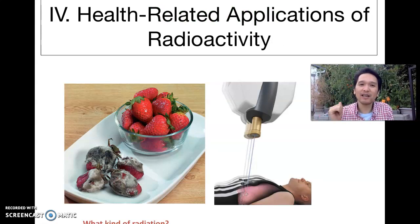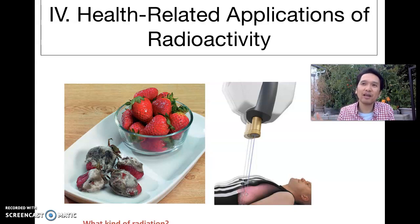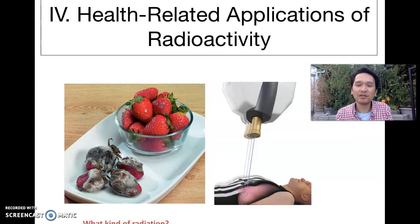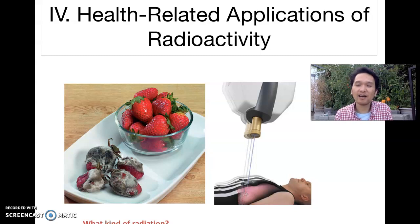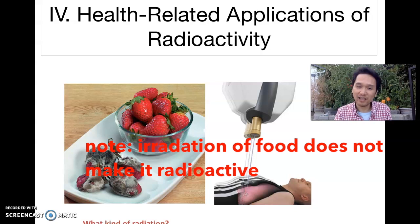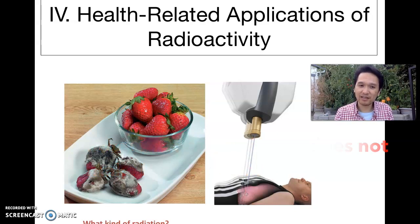The last part we will talk about is the health-related applications of radioactivity — where we see radiation in our everyday lives. Radiation can be used in the food industry to kill bacteria on food. For example, with a strawberry: one is treated with radiation, one is not. The one treated with radiation will last longer because the bacteria on the strawberry has been killed, so it won't rot.